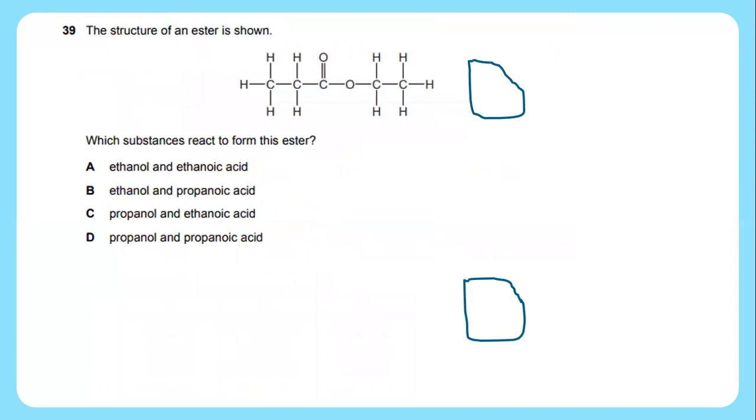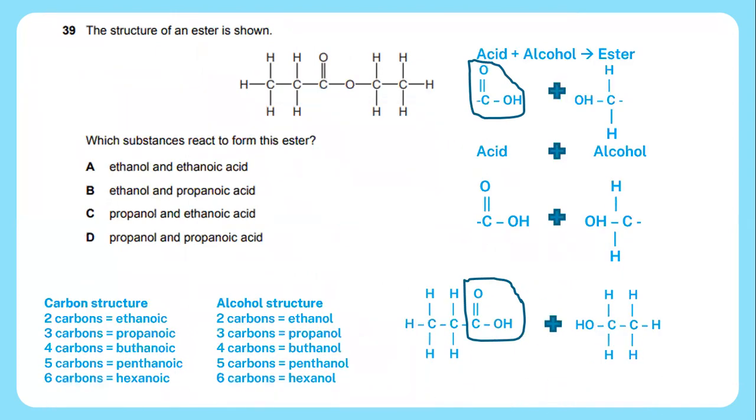Question 39: The structure of an ester is shown, which is CH3, CH2, COO, C2, CH3. What is the ester? Ester is a combination of the reactions between acid and alcohol. If you want to recognize the acid, a structure which consists of COOH is referring to acid. Meanwhile, alcohol is where you have OH and CH2. In this case, based on the carbon structure, when there is two carbons, you can see that there is ethanoic.